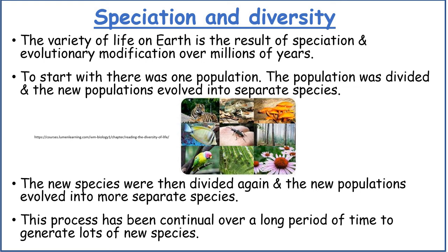The variety of life on Earth is the result of speciation and evolutionary change over millions of years. To start with, there was one population. That population was divided and the new populations evolved into separate species. The new species were then divided again and evolved into more separate species. This process has been continual over a long period of time to generate lots of new species.